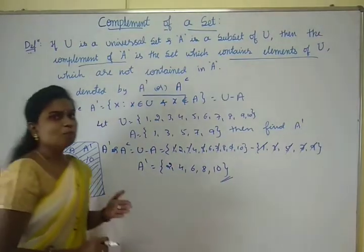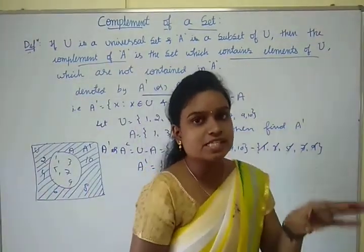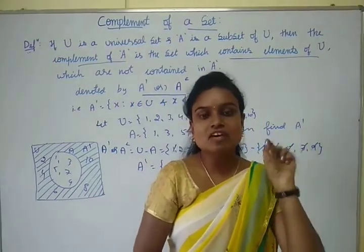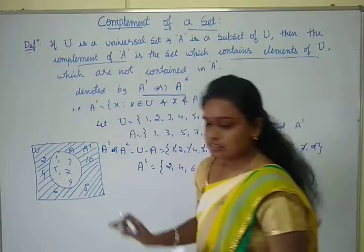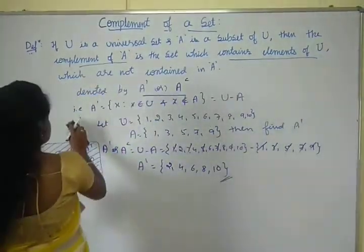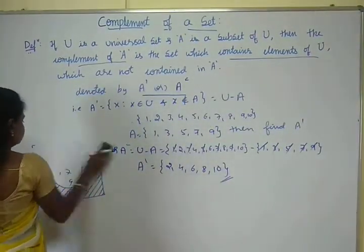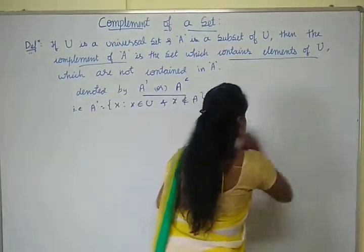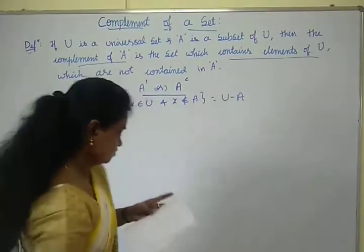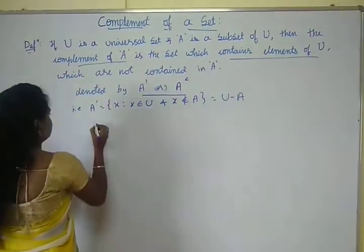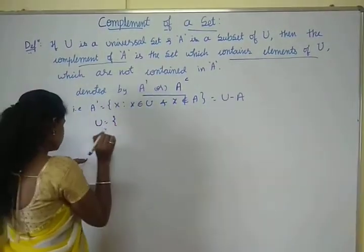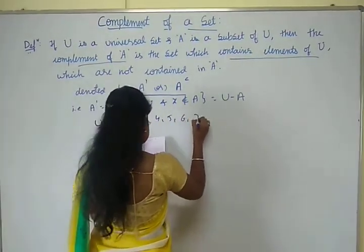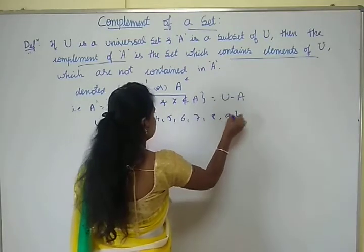Complement of a set means the elements which are present in the universal set but not in the given set. Now I will consider another example. The universal set U = {1, 2, 3, 4, 5, 6, 7, 8, 9}.